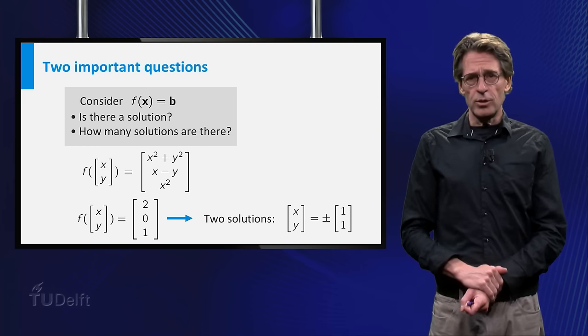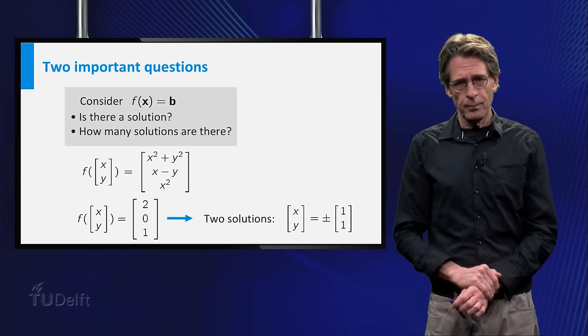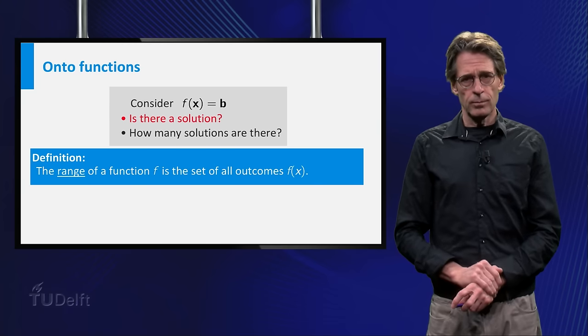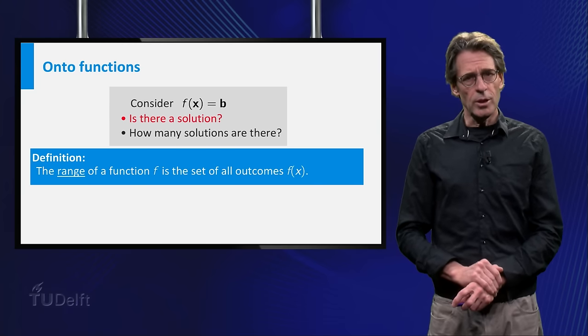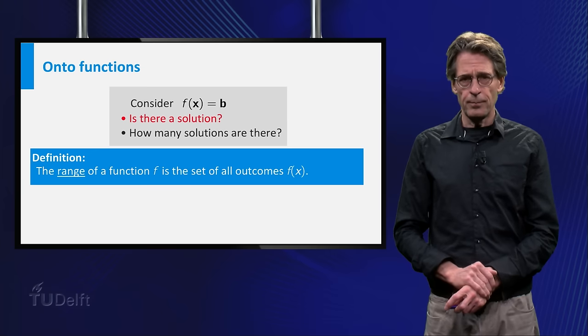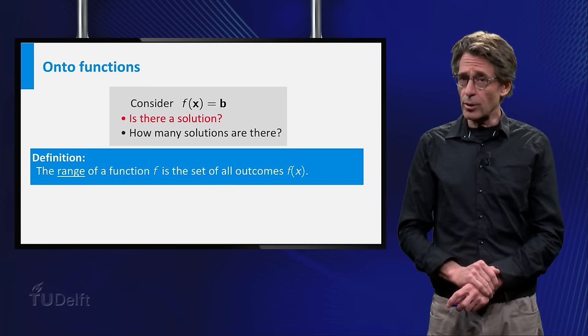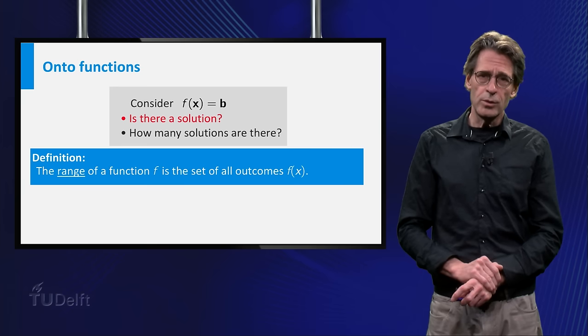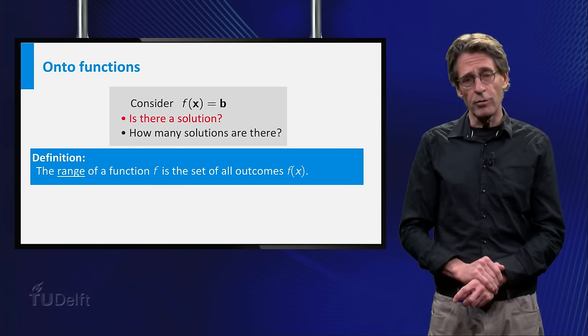Now for some definitions, which you may have seen before. The range of a function is the set of all possible outcomes. The range is obviously a subset of the codomain, and as we have just seen, it doesn't have to be the entire codomain. The vector minus 1, 3, 2 was not in the range of f.